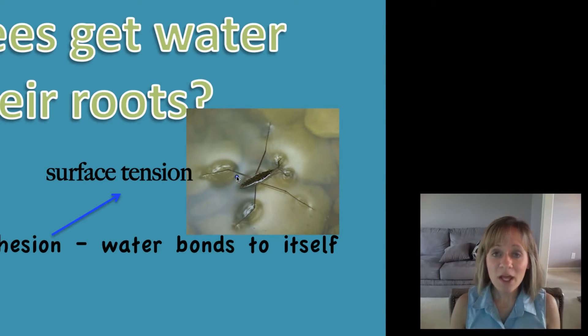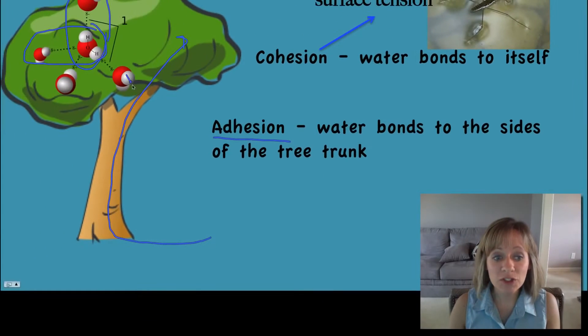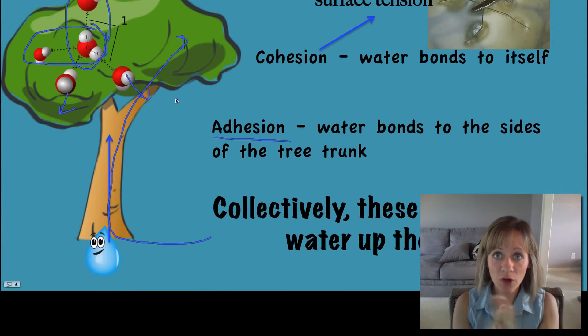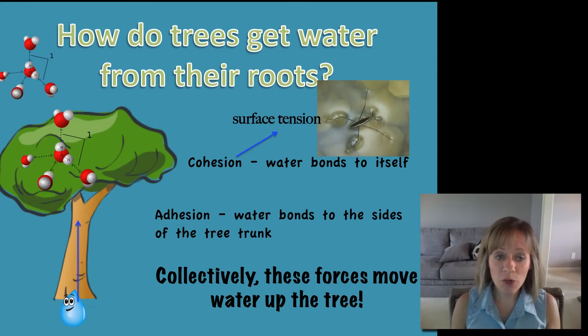The other force that's happening is adhesion. Adhesion is when water is bonding to something else, for example when water is bonding to the sides of the tree trunk. The combination of the cohesion sticking to one another and the adhesion sticking to the tree trunk—together these forces are moving water up a tree. Maybe as a little extra assignment, find out what the name of this process is, how trees get water up to the top of their leaves.